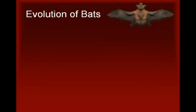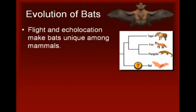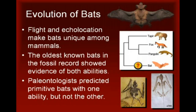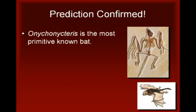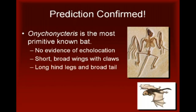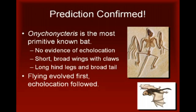The next example involves the evolution of bats. Bats are unique among mammals because of their ability to fly and their ability to echolocate. For quite some time, the oldest known bats in the fossil record showed evidence of both of these abilities. Using evolutionary theory, paleontologists predicted that they should find primitive bats with one of these abilities, but not the other. This prediction was confirmed by the discovery of Onychonycteris, the most primitive known species of bat, discovered in Wyoming and embedded in rocks that are around 50 million years old. Onychonycteris had an underdeveloped inner ear that suggests it was unable to echolocate. It also had short, broad wings with claws on all five fingers, longer hind legs, and a broader tail than modern bats. This evidence indicates that flying evolved first, and echolocation evolved later.